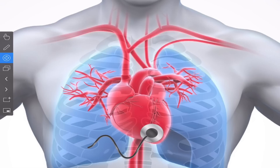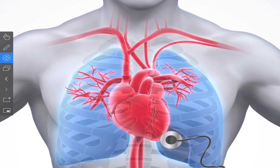For auscultating the tricuspid valve, place your stethoscope roughly at the fifth or sixth intercostal space, almost hugging the base of the xiphoid process or the base of the sternum — that's the best spot to hear the tricuspid valve. For the mitral valve, once you're at the tricuspid valve position, go along that same intercostal space one stethoscope spot over to the left.